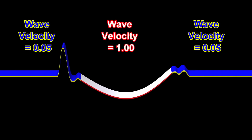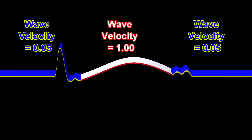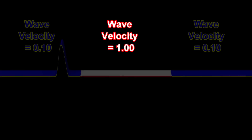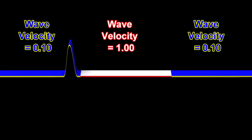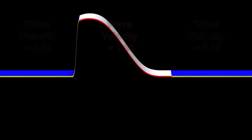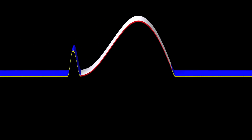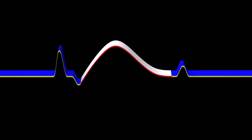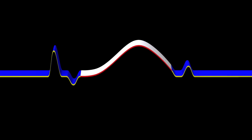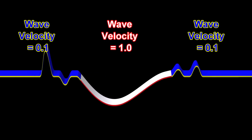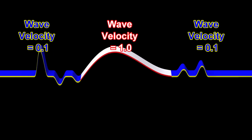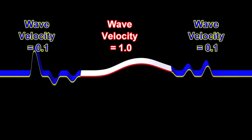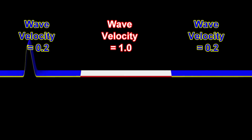Let's keep the wave velocity inside the middle material equal to one, but increase the wave velocity inside the blue material. Let's now again keep the velocity inside the middle material equal to one, but increase the wave velocity inside the blue material even further.